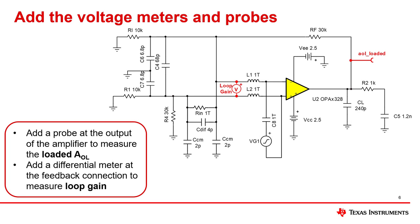The last step in the modification of the circuit is to add test probes and meters. The circuit only needs two meters, one on the output of the amplifier called AOL loaded and one on the feedback connection called loop gain. The loaded AOL is the amplifier's internal open loop gain with the output impedance and output load interaction included.